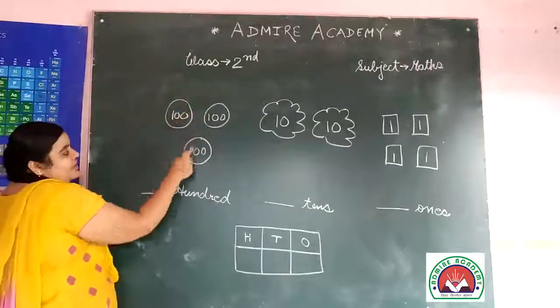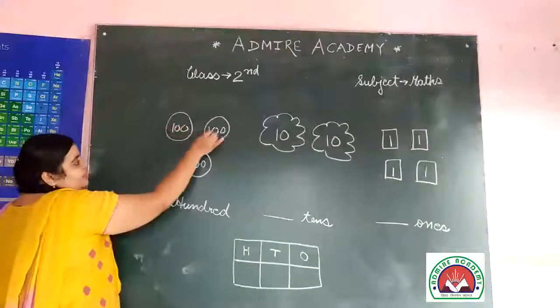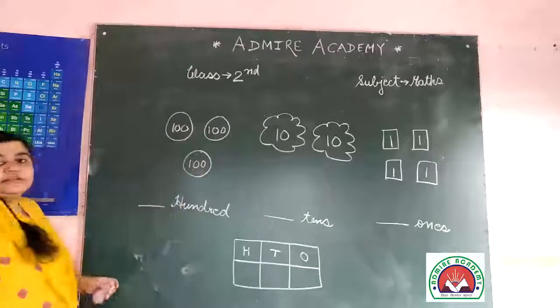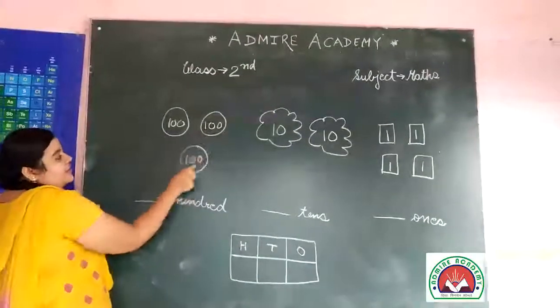Circles are one, two, and three. And in each circle, what do you have to do? In each circle, there are hundreds.